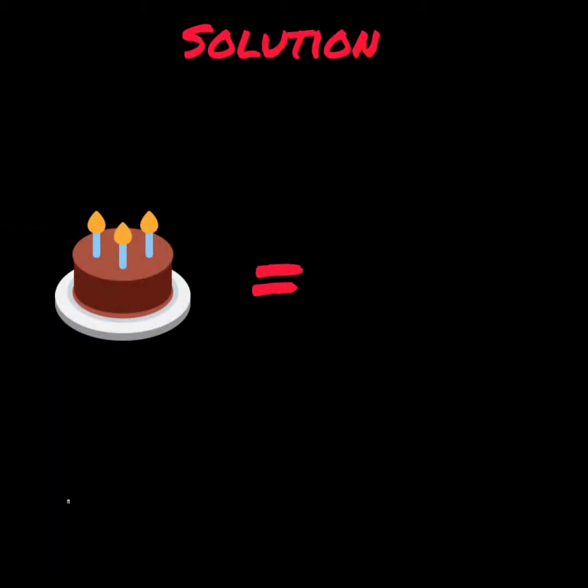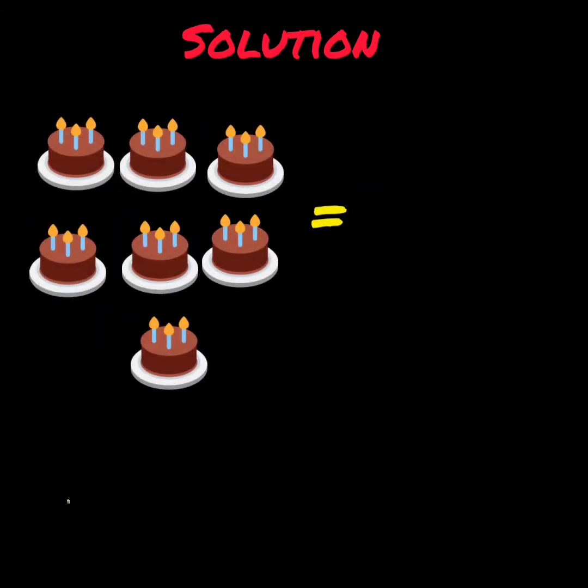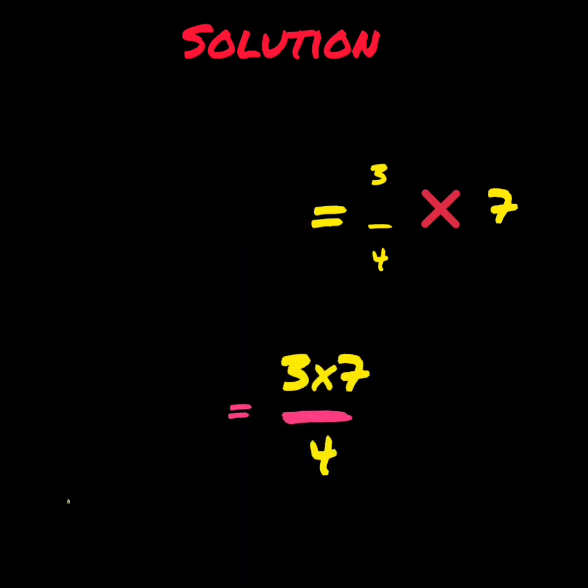If the weight of one cake is 3 by 4 kg, then to find out the weight of 7 such cakes, we will multiply 3 by 4 by 7. As we have already learned how to multiply a fraction by a counting number, multiply numerators: 3 times 7 is 21, and denominator remains the same. Therefore, the weight of 7 such cakes will be 21 by 4 kg.